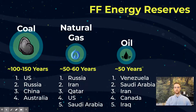First, we'll cover the basic proven reserves estimated to be remaining for each major fossil fuel source and where these fossil fuels are located. Coal is the largest proven reserves remaining — we estimate the coal reserves of the earth to last somewhere between 100 and 150 years at current rates of consumption. The top coal-containing countries are the United States, Russia, China, and Australia.